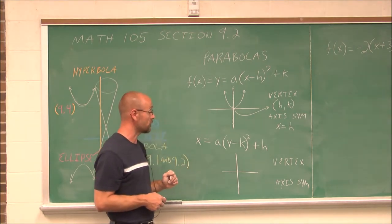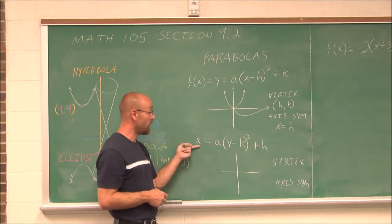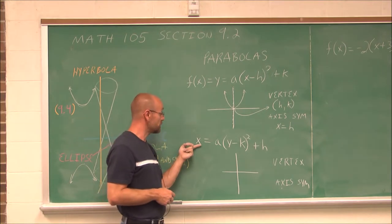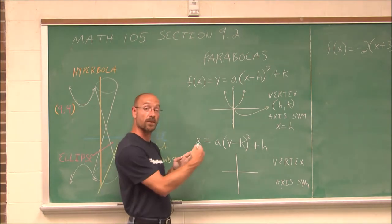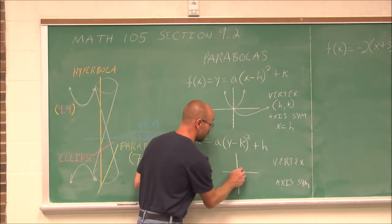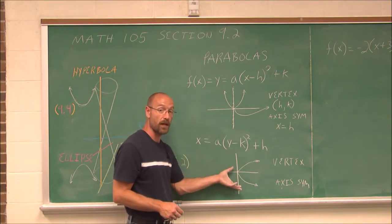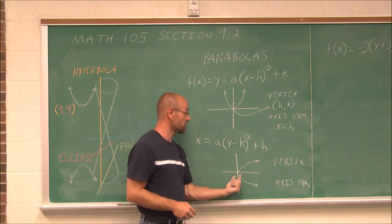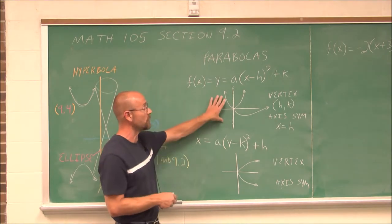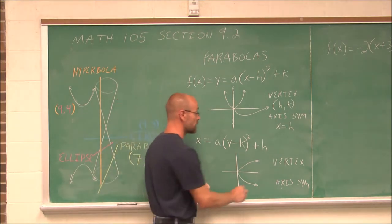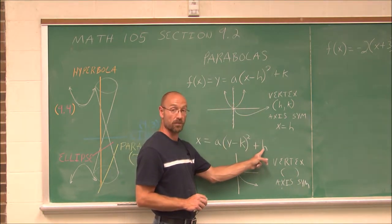Because it wouldn't pass the vertical line test. Essentially, when we see a parabola written in standard form but it's not a function — x being first, with y being squared — that tells me it's a parabola that either opens to the right or to the left. It still has that parabola shape, and we can still determine all about its behavior. I can determine its vertex: the vertex is always the value h, k. Now h is outside the parentheses, but it still tells me the vertex.